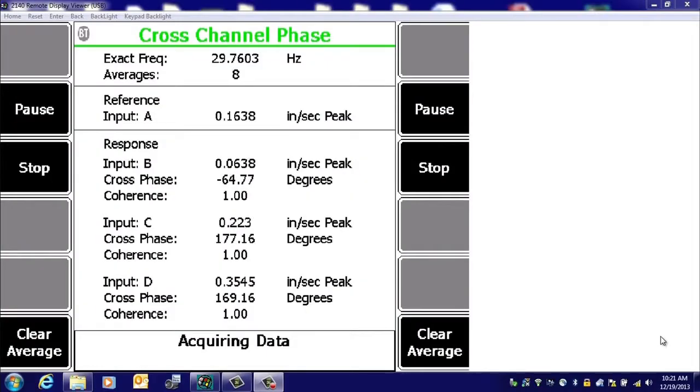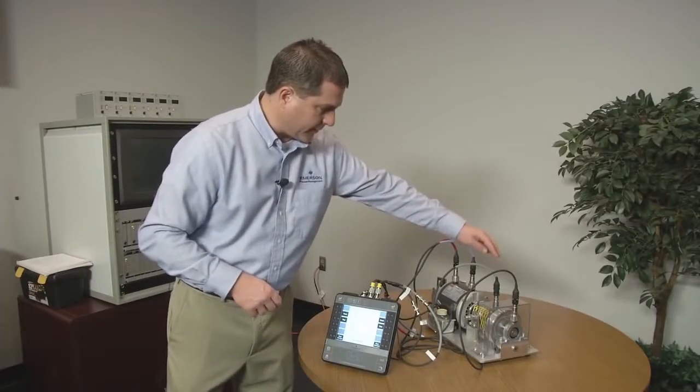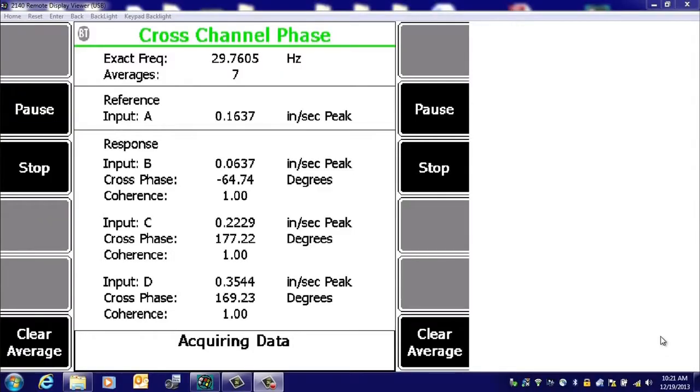But notice the cross channel phase between A and C, that would be across the coupling, is negative 177. So pretty close to almost 180 degrees phase shift going across that coupling, very indicative of misalignment condition, verifies what we suspected from using our fault frequencies and cursor to mark the two times line frequency peak in the spectrum. And so now we've just run a very simple test to verify our earlier conclusion and diagnosis.